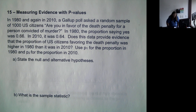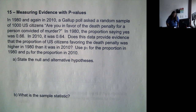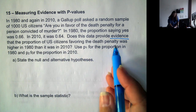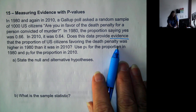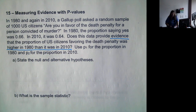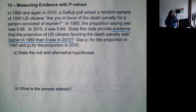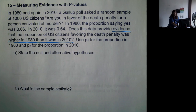In 1980, and again in 2010, a Gallup poll asked a random sample of 1,000 U.S. citizens: are you in favor of the death penalty for a person convicted of murder? In 1980, the proportion was 0.66. In 2010, it was 0.64. Does this data provide evidence that the proportion of U.S. citizens favoring the death penalty was higher in 1980 than it was in 2010? Use p1 for the proportion in 1980 and p2 for the proportion in 2010. Since it's telling us what to use for the different proportions, we will not have to define them.